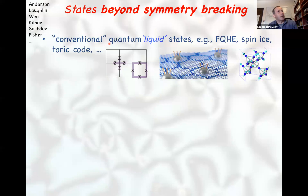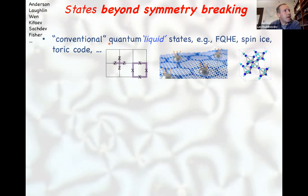What I want to shift to is the frontier of hard condensed matter physics over the past 20 or 30 years — states of matter that do not fall under the Landau local order parameter paradigm. I will call these conventional quantum liquid states of matter. For the purposes of this talk, these will be a transition point to something more exotic that I am going to talk about, which are fractons.